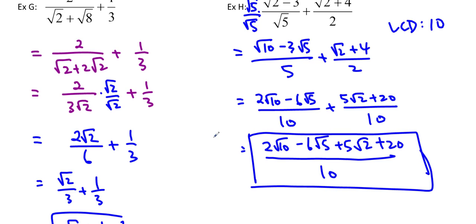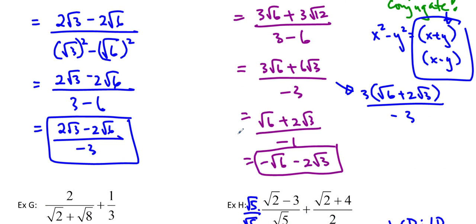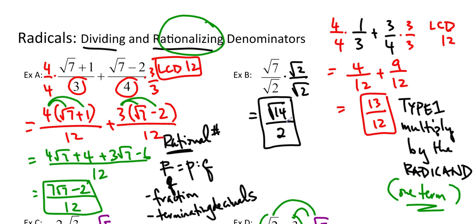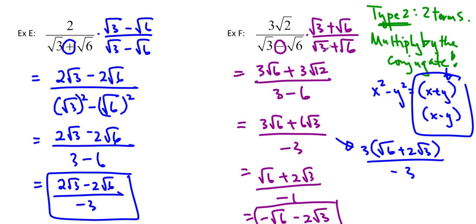So there you go — that's how you do it. The first type is when you have one term in the bottom, and you multiply by the radicand. The second type is two terms in the bottom — you multiply by the conjugate — and make sure that you simplify all the way. Hope you enjoyed it. Bring any questions you have to class, and I'll see you soon. Bye!